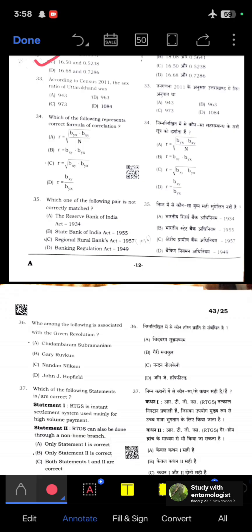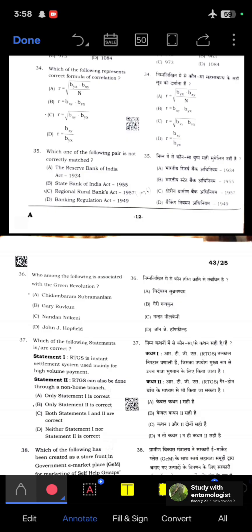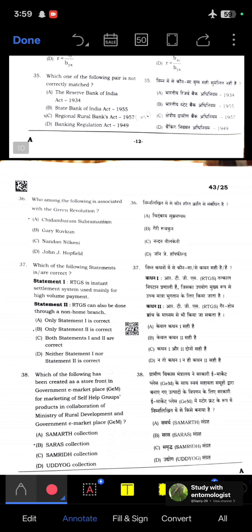According to Census 2011, the sex ratio of Uttarakhand was 963. Which of the following represents the correct formula of correlation? r equals square root of bxy dot byx. Which of the following pairs is not correctly matched? RBI Act 1934, State Bank of India Act 1955, Regional Rural Bank Act came in 1976, and Banking Regulation Act 1949. A, B, and D are correct, only C is mismatched.